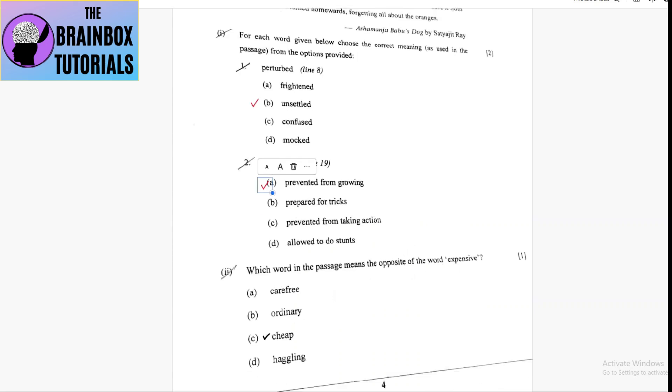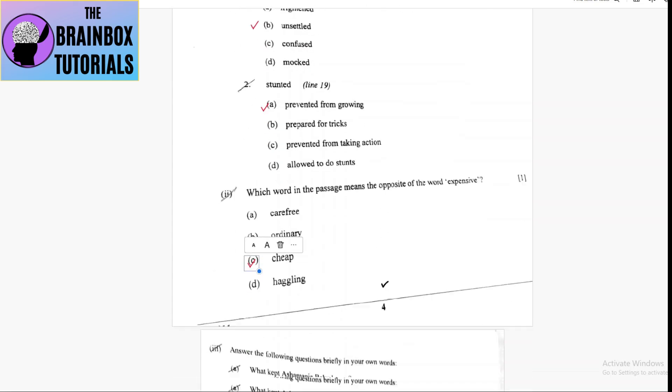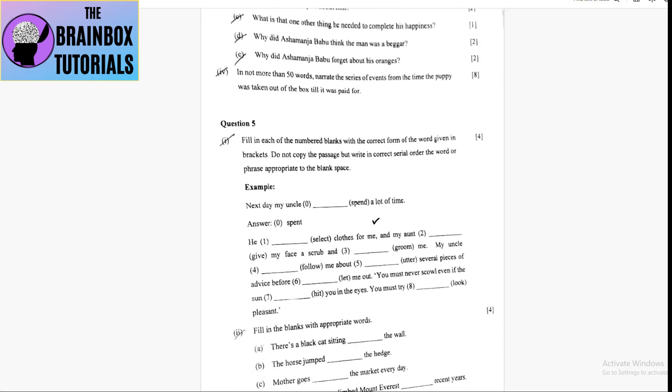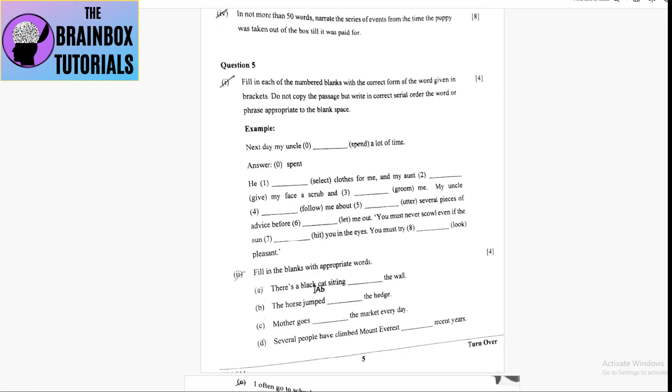Third one is the opposite of the word expensive, that is C, cheap. Then question and answer antonyms. Now coming to the grammar part.